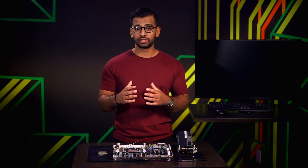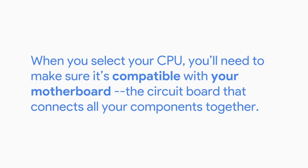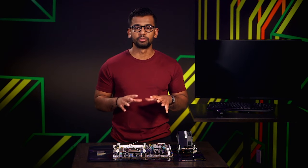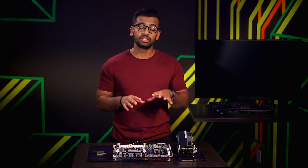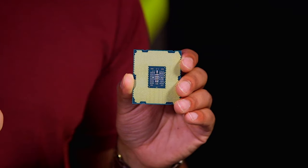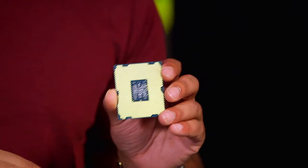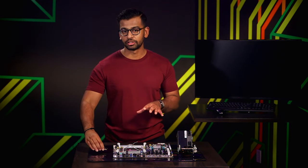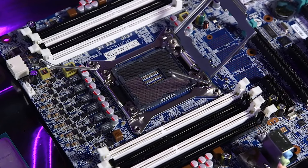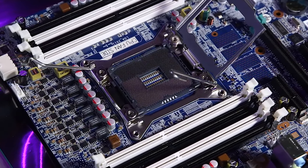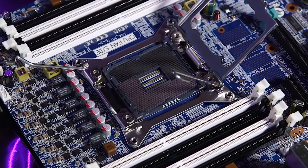When you select your CPU, you'll need to make sure it's compatible with your motherboard, the circuit board that connects all your components together. You can't just buy a bunch of parts and expect them to work together. There are different ways CPUs fit on motherboards using different sockets. Your CPU might have tiny pins that either stick out or have contact points that look like dots. There are currently two major types of CPU sockets: Land Grid Array, also known as LGA, and Pin Grid Array, also known as PGA. In an LGA socket, there are pins that stick out of the motherboard. Always make sure your CPU and socket are compatible beforehand.